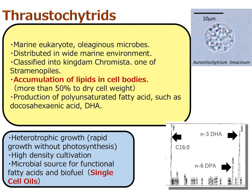This is a microscopic observation image. Thraustochytrids are unicellular microbes — circular shaped, looking like white plankton — but they cannot carry out photosynthesis. Like bacteria, they carry out heterotrophic metabolism, utilizing organic compounds, and they can binary divide and increase cell numbers similarly to bacteria.